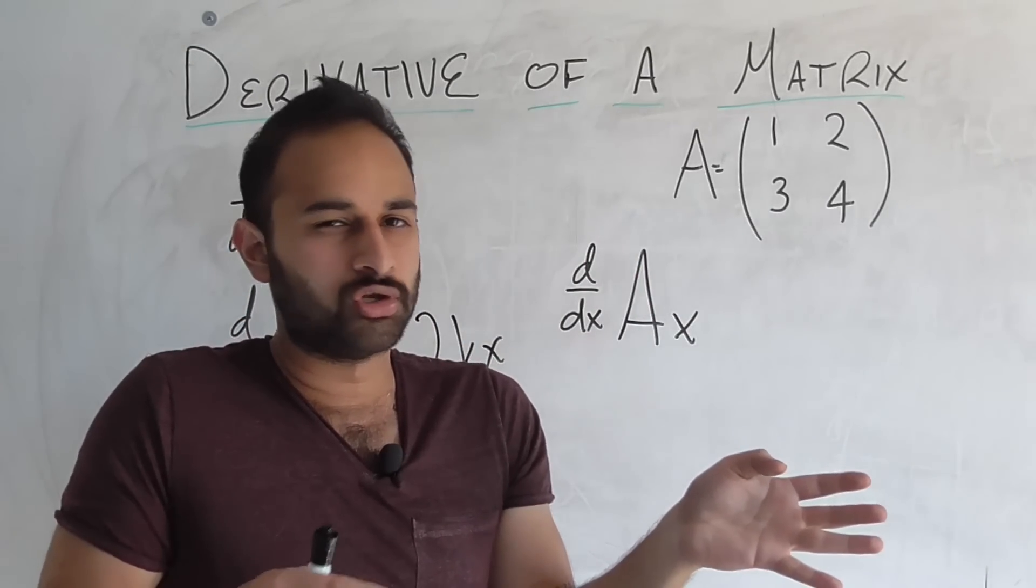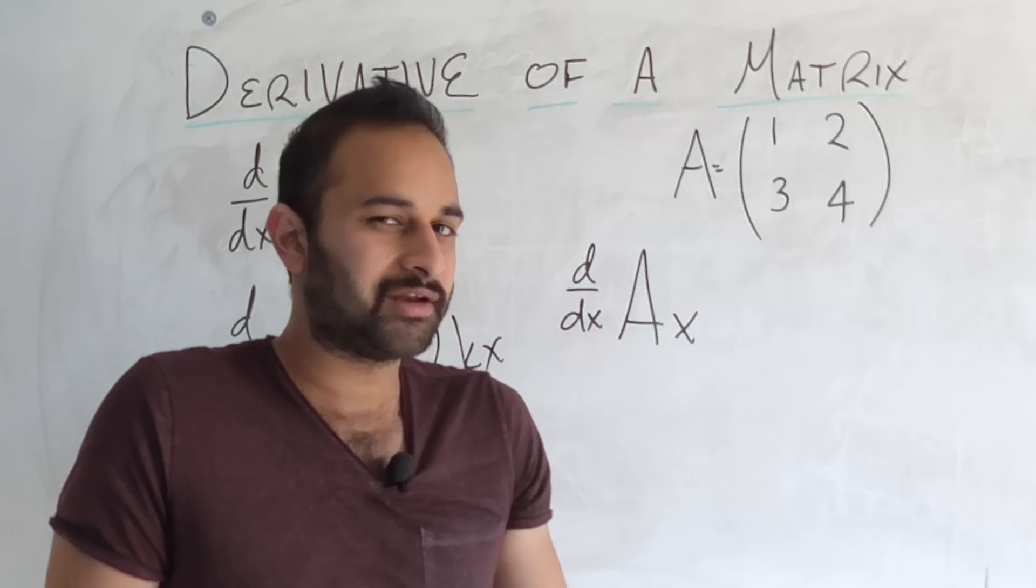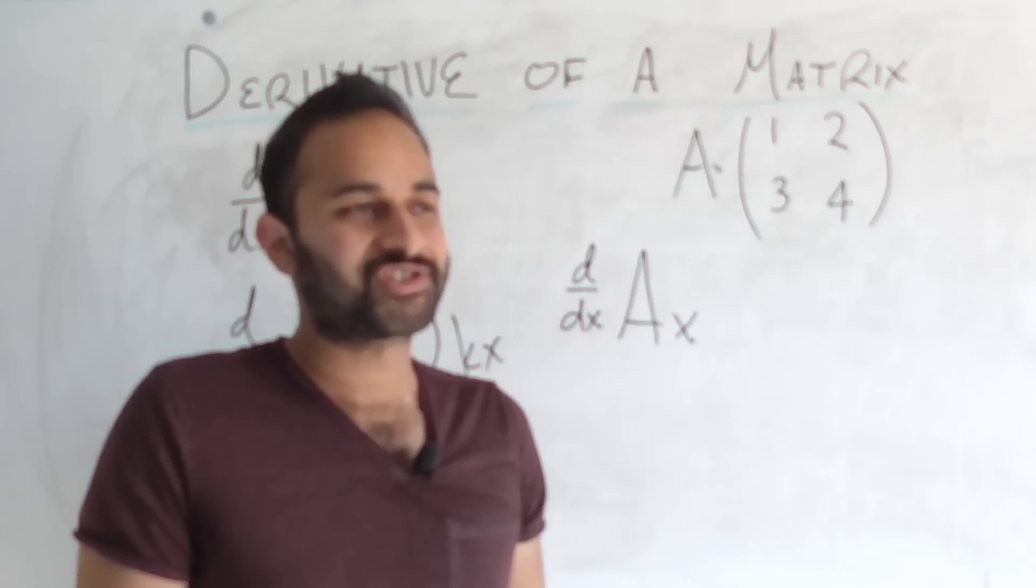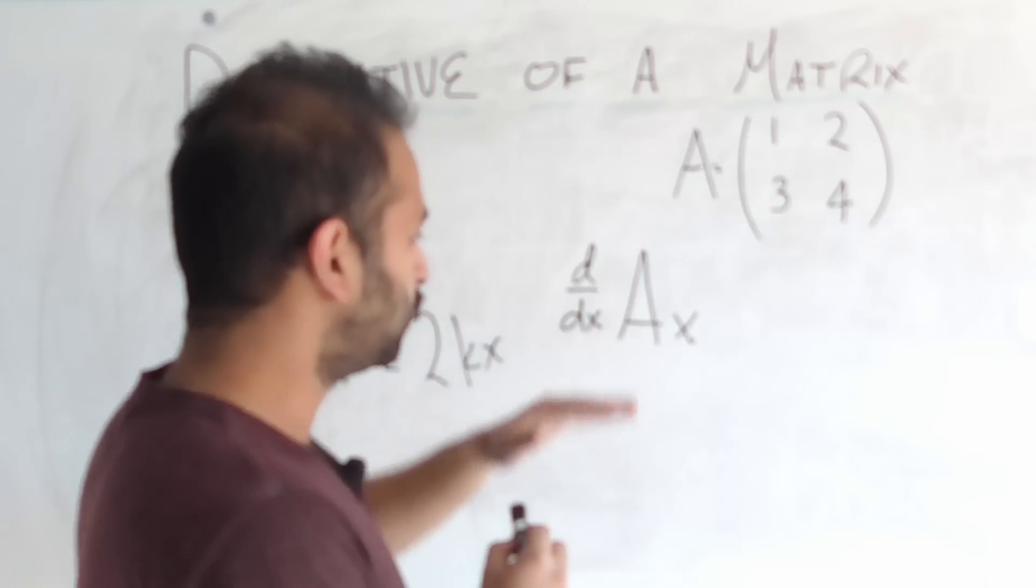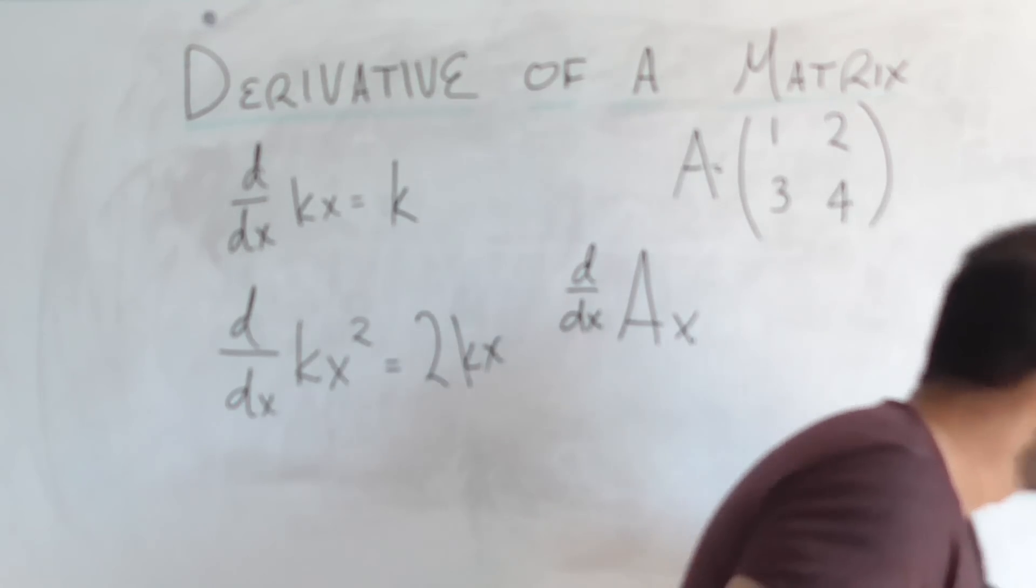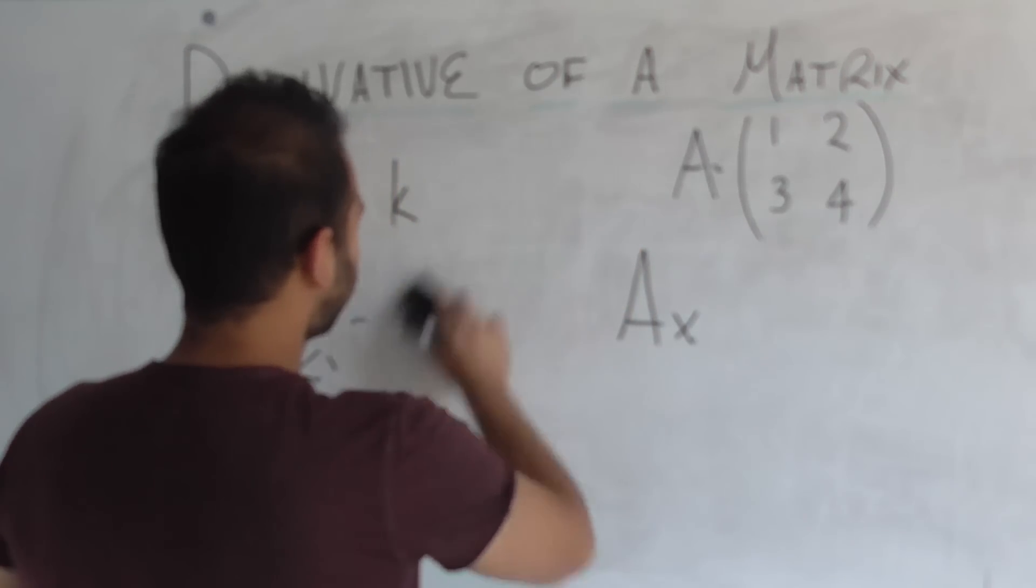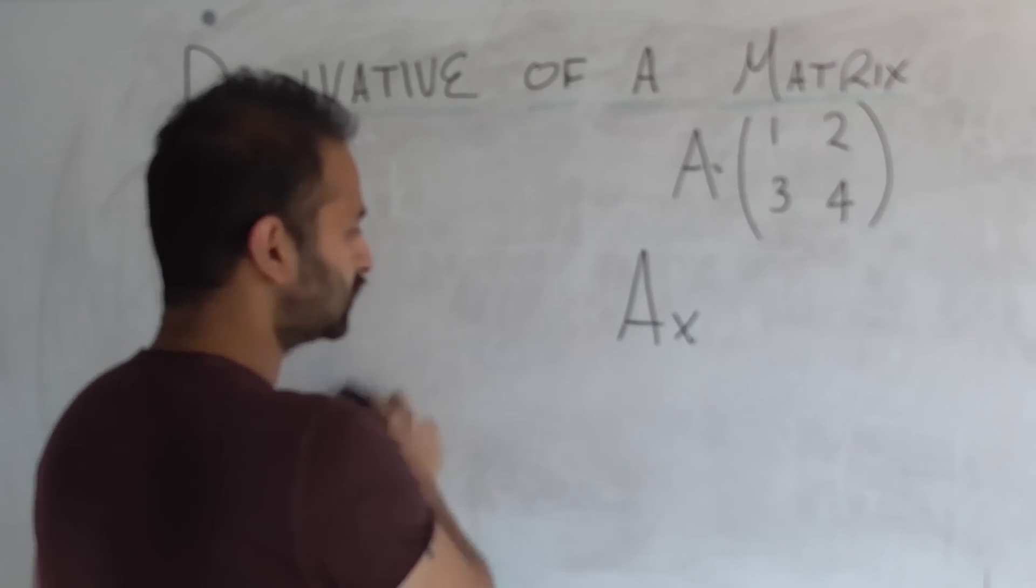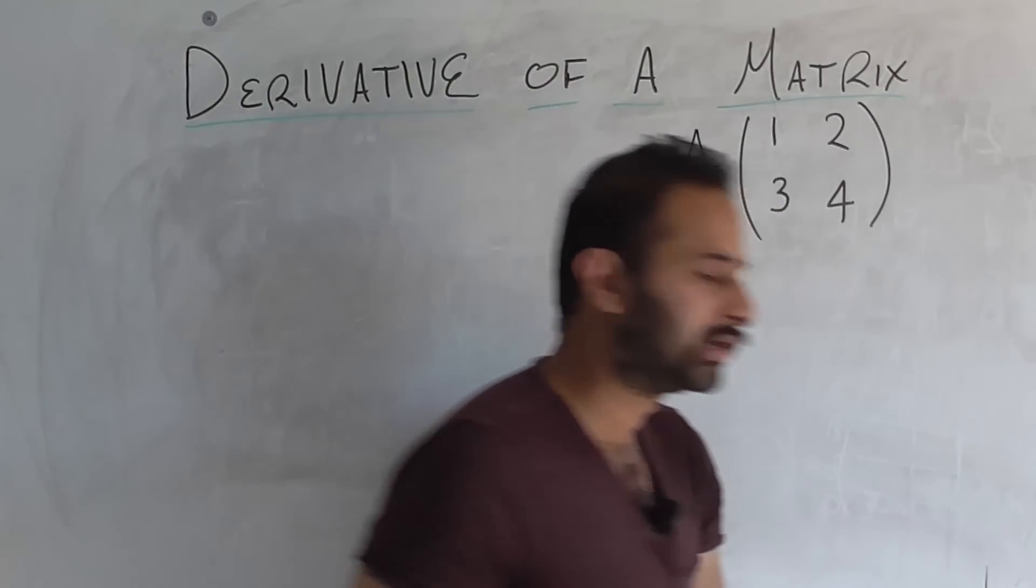So since it's a function, it should also have a derivative, right? Yes, it should. It's just a matter of defining it properly. So before we worry about the derivative part, let's look at what A times x actually means.